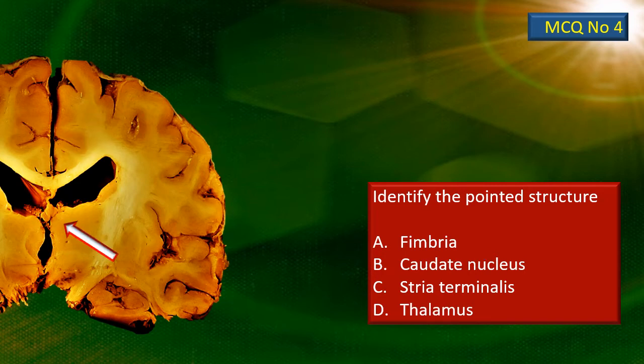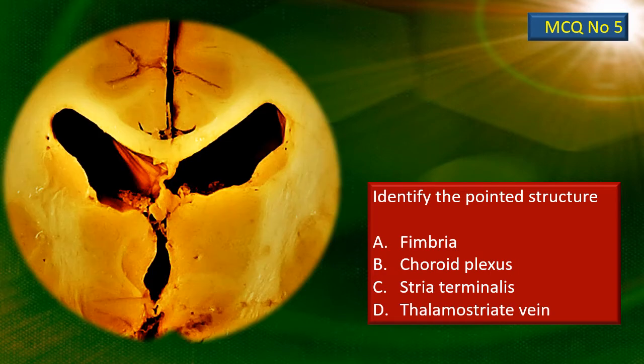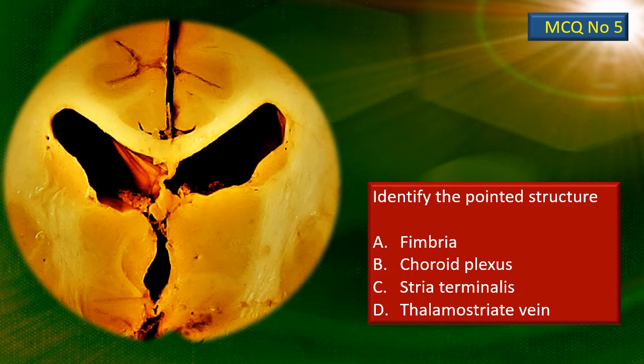MCQ number 4 — the same coronal section. There is a flashing arrow pointing to a particular structure; identify that structure. Last MCQ: it is a close-up view of the lateral ventricle and the third ventricle in cross-section, the same coronal section as the previous slide. One particular item has been highlighted by a flashing arrow — identify that structure.